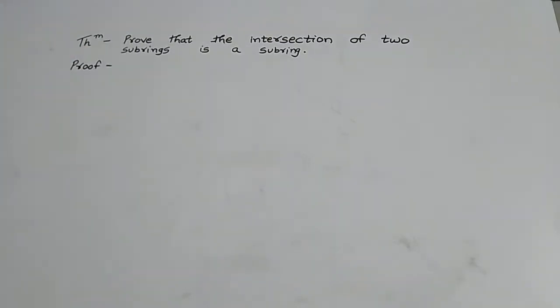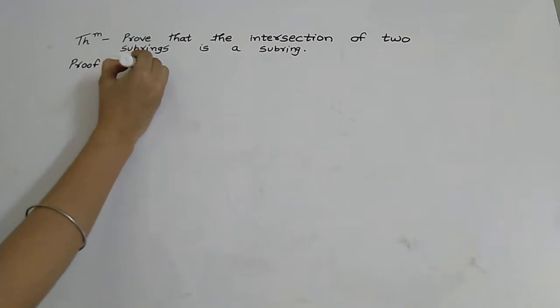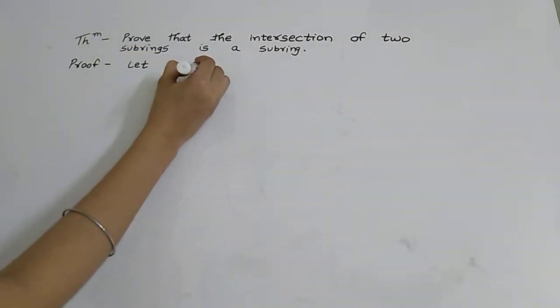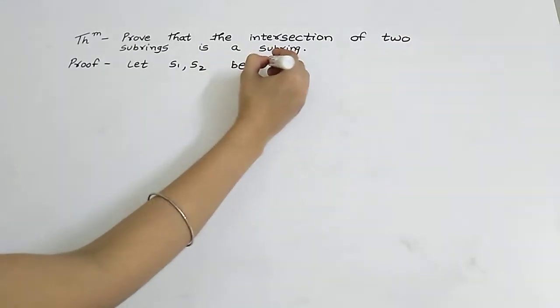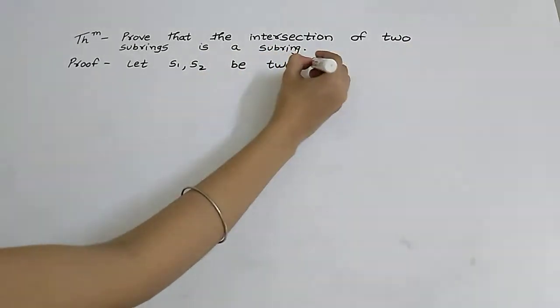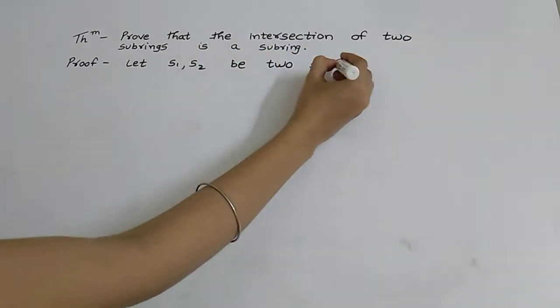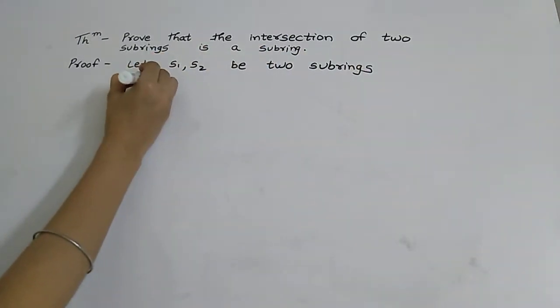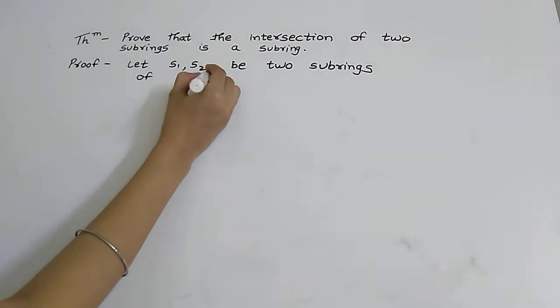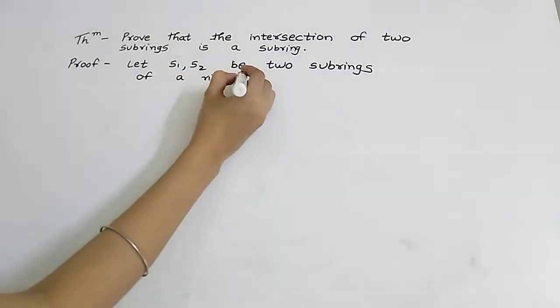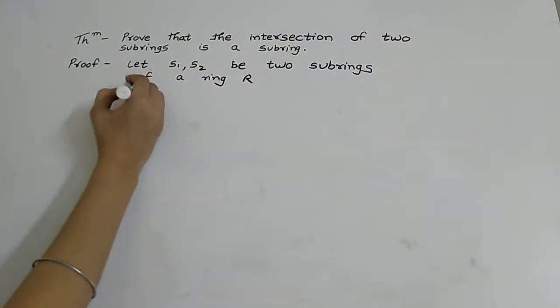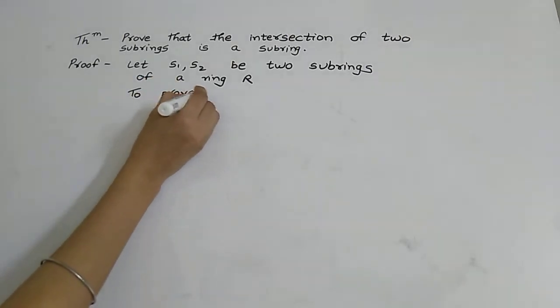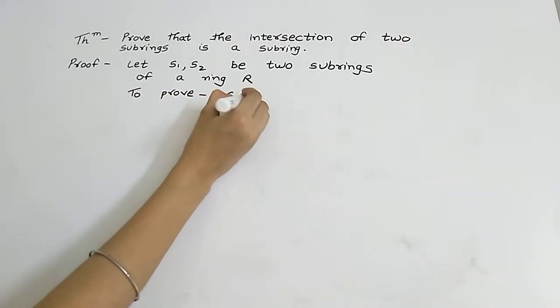Let S1, S2 be two subrings of ring R. Now we have to prove that S1 intersection S2 is again a subring of R.